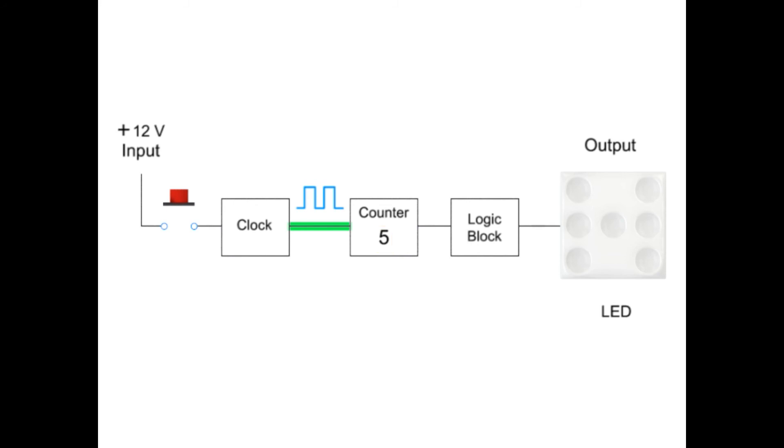The binary output from the counter is decoded by the logic block, which lights the proper LEDs representing the decimal value of the counter. Thus, each time the push button switch is pressed and released, a random number from 1 to 6 is generated and is displayed as one side of a six-sided die.